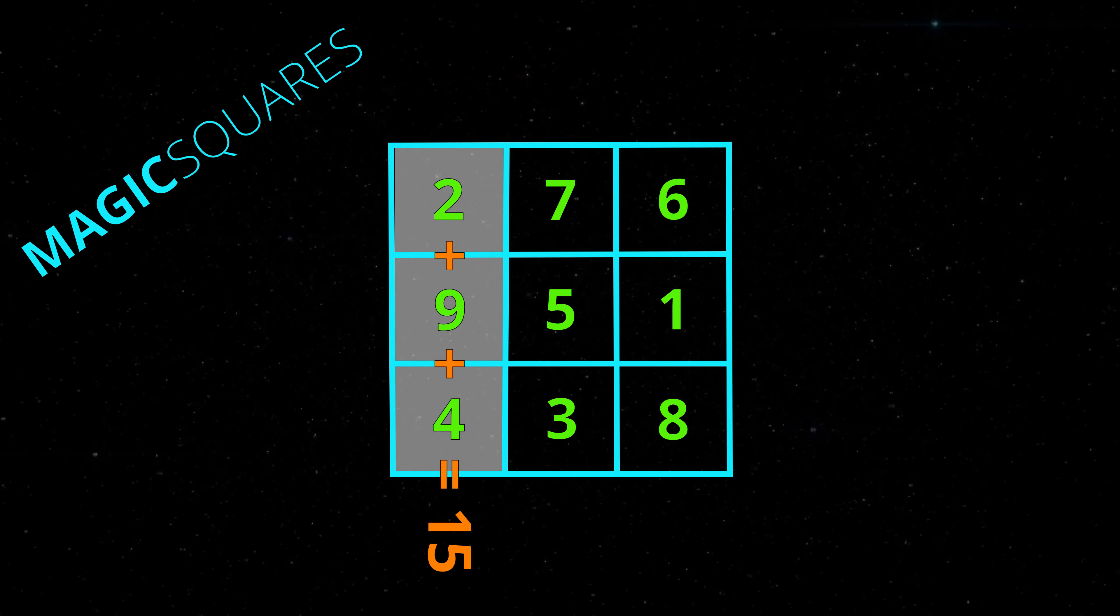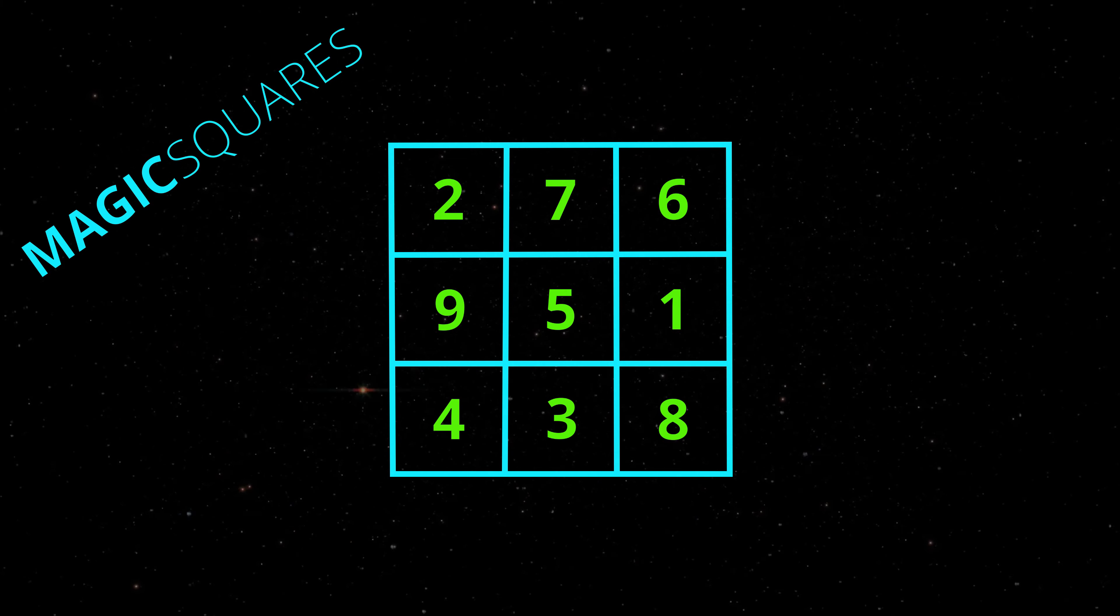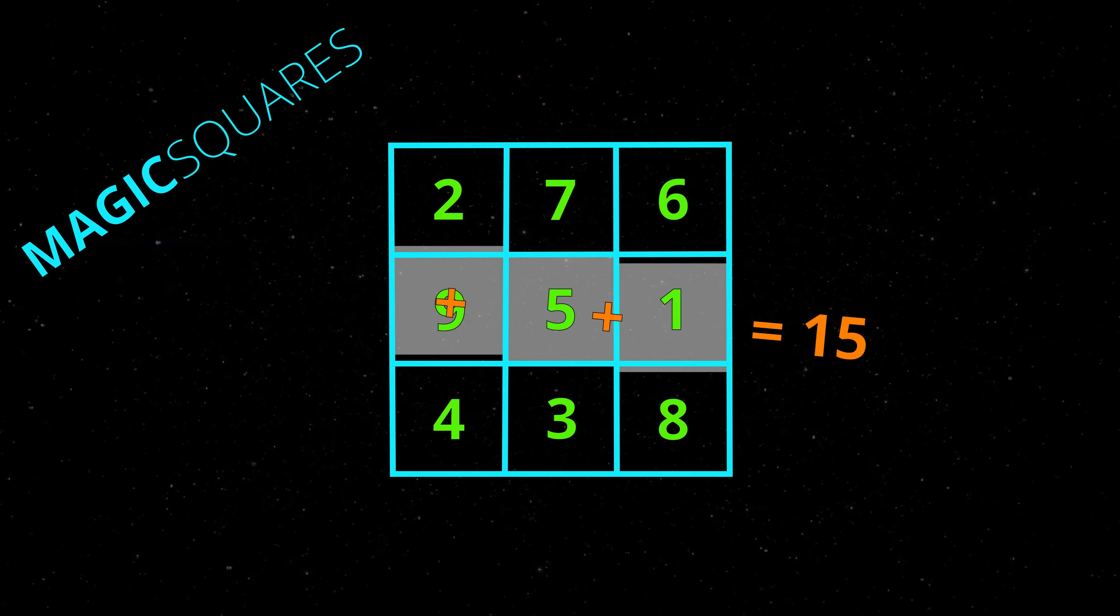Each column also adds to 15, and each diagonal adds to 15.